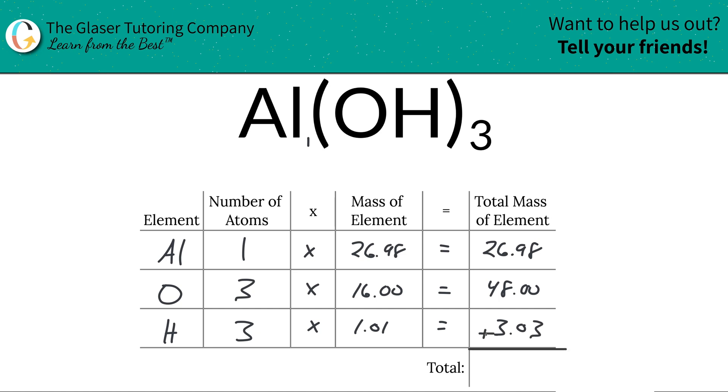Now to find the total mass then of the entire compound, all we have to simply do, nice and simply, add this column up. And when we do that, we get a value of 78.01.